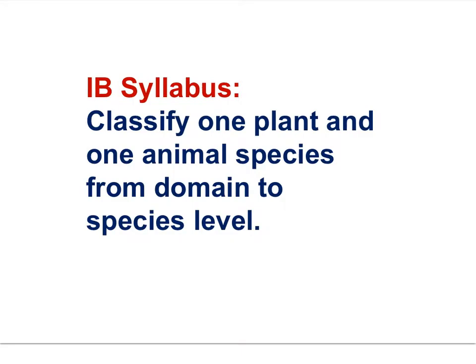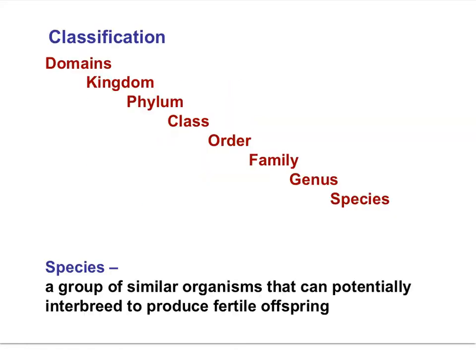The last IB syllabus statement of the movie is: classify one plant and one animal species from domain to species level. Remember the hierarchy: domain, kingdom, phylum, class, order, family, genus, species — 'Doubtful King Philip came over from Great Spain.'